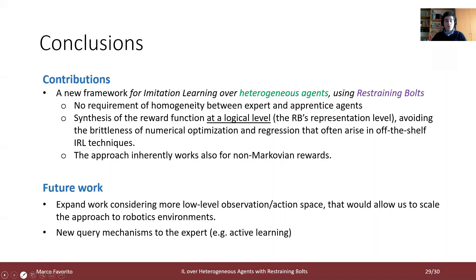To summarize, our contribution consists of a new framework to perform imitation learning over heterogeneous agents using restraining bolts. There is no requirement of homogeneity between the expert and the apprentice agent in terms of observation or action space. Moreover, the synthesis of the reward function at a logical level — the restraining bolt's representational level — avoids the use of numerical optimization and regression.